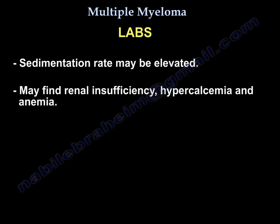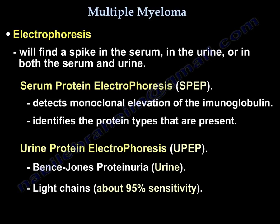Labs will show an elevated sedimentation rate. You may find renal insufficiency, hypercalcemia, and anemia. On electrophoresis, you find a spike in the serum, in the urine, or in both. Remember SPEP and UPEP: SPEP is serum protein electrophoresis — it detects monoclonal elevation of immunoglobulin and identifies the types of proteins present. UPEP detects Bence-Jones proteinuria, which is a light chain, with about 95% sensitivity.